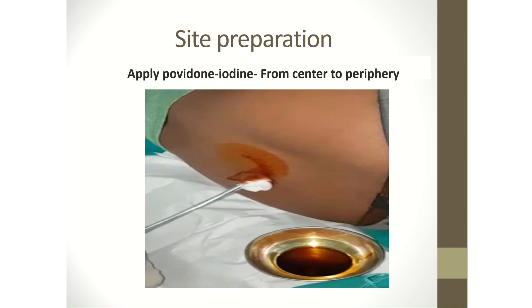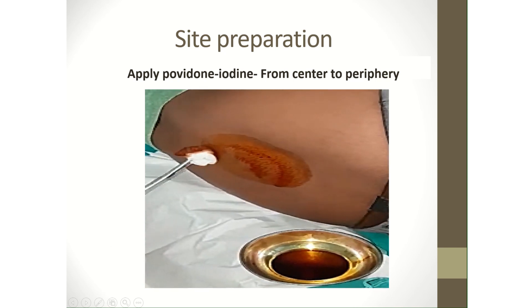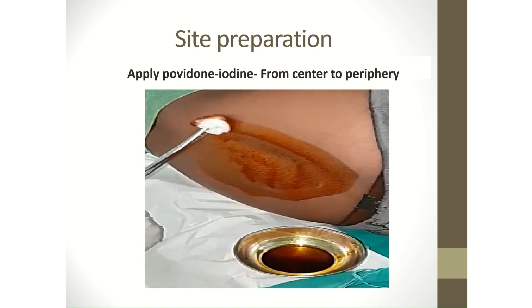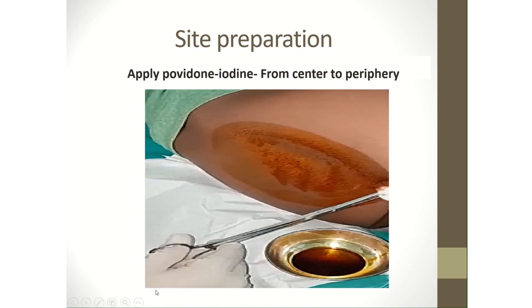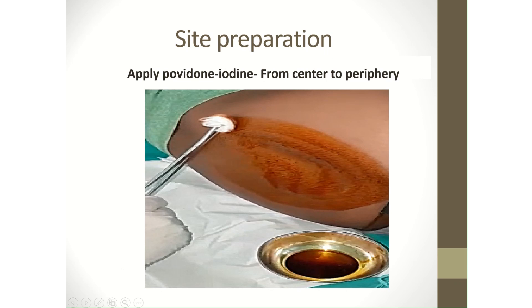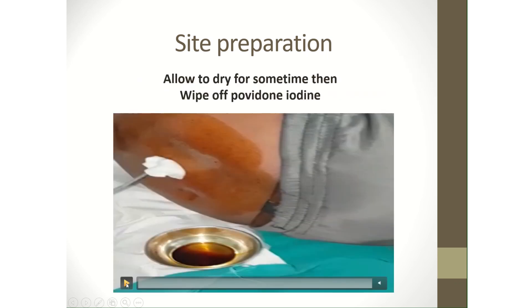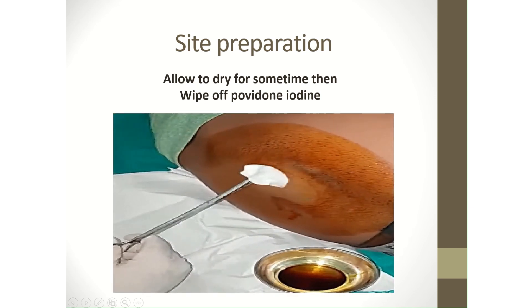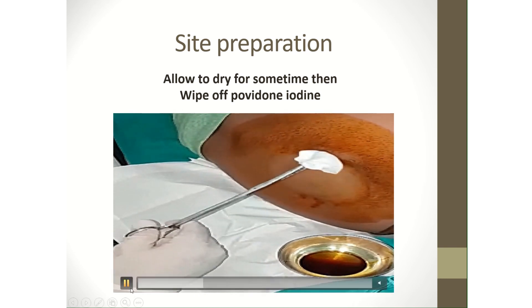Once the point has been selected, the site has to be disinfected with povidone iodine as shown in the video. The area has to be scrubbed from the center to the periphery, and once scrubbed with povidone iodine it has to be wiped off again from center to periphery to avoid chemical arachnoiditis.